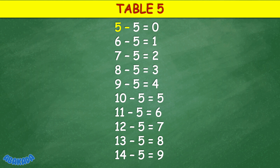Table 5: 5 minus 5 equals 0, 6 minus 5 equals 1, 7 minus 5 equals 2, 8 minus 5 equals 3, 9 minus 5 equals 4, 10 minus 5 equals 5, 11 minus 5 equals 6, 12 minus 5 equals 7, 13 minus 5 equals 8, 14 minus 5 equals 9.